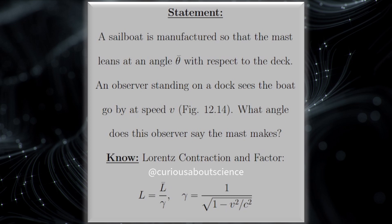a sailboat is manufactured so that the mast leans at an angle of theta bar with respect to the deck. An observer standing on the dock sees the boat go by at speed v, figure 12.14. What angle does this observer say that the mast makes?